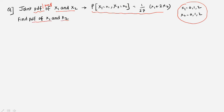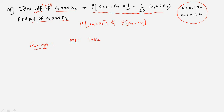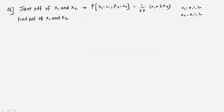We need to find the individual (marginal) PDFs of x1 and x2. There are two ways to solve this: the first method uses a table, and the second is the elimination method. Both are important — the elimination method is the standard and preferable approach because it gives you the equation and the table as well.